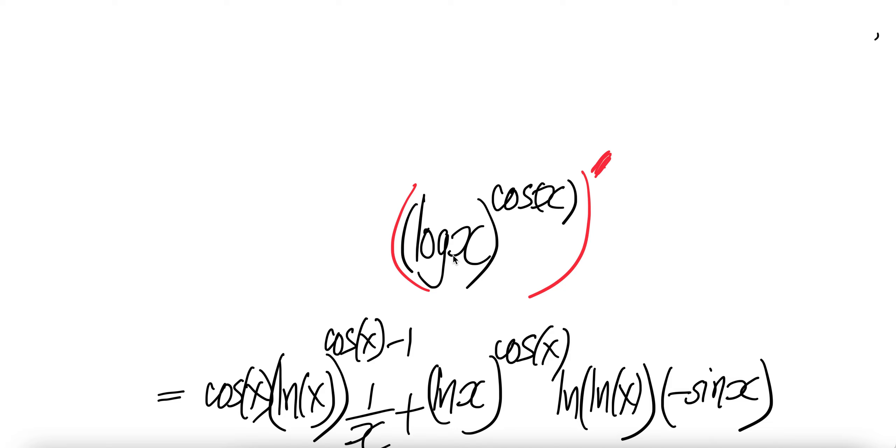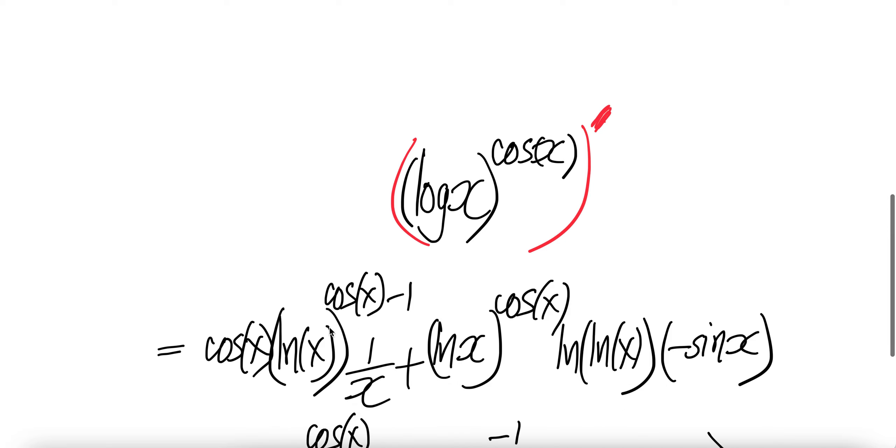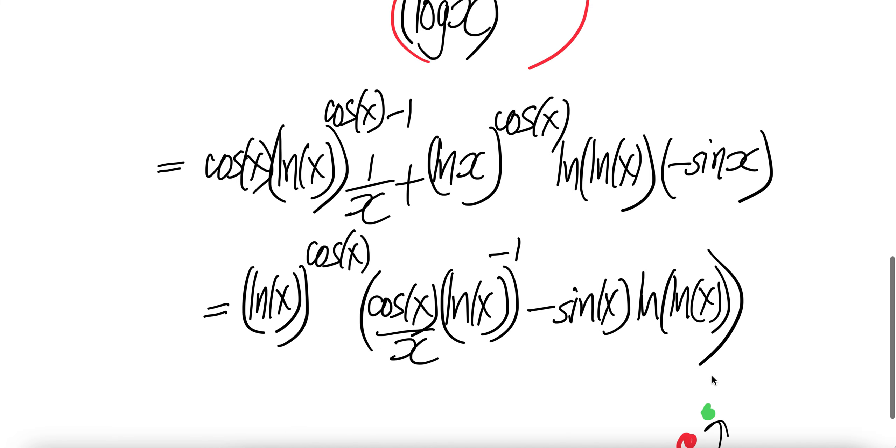Times the derivative of ln X is one over X, plus ln X to the power of cos X times ln of ln X, times the derivative of cosine is negative sine X.